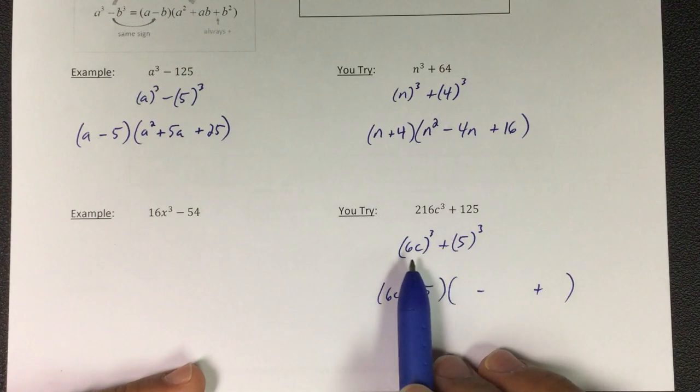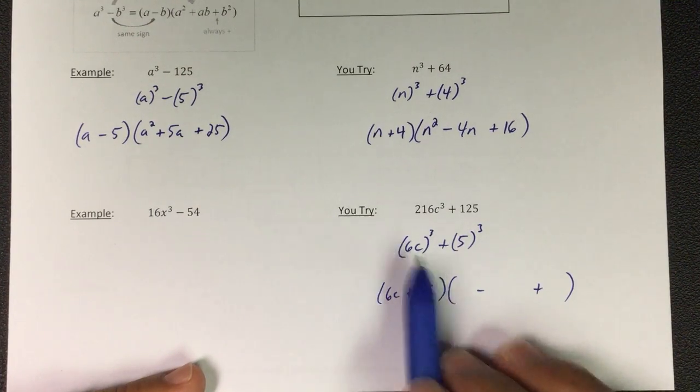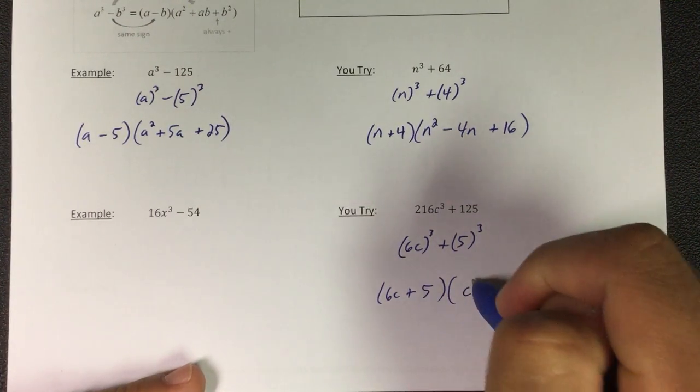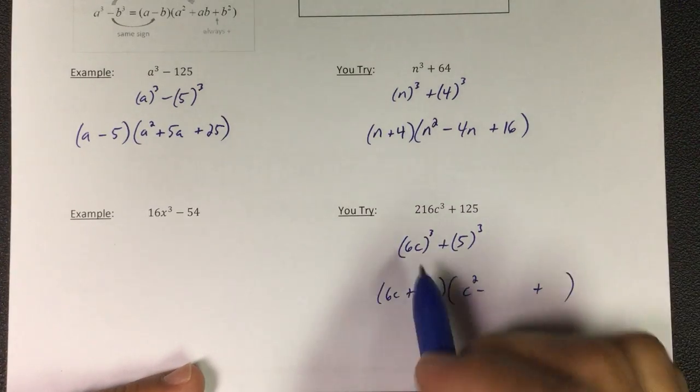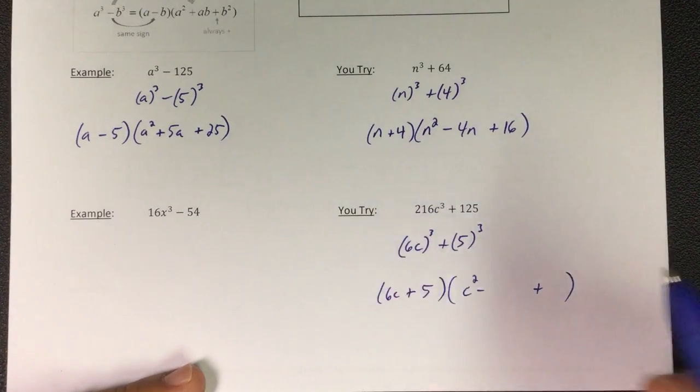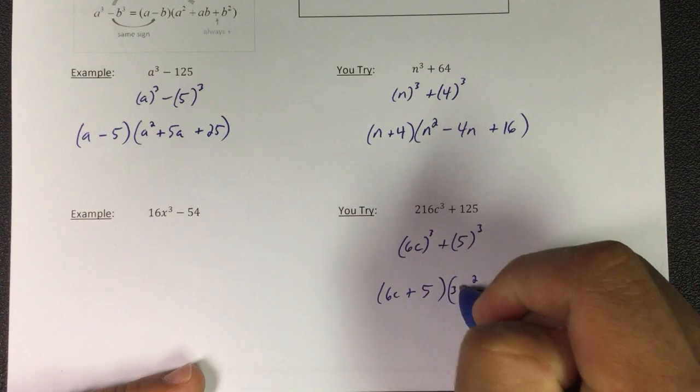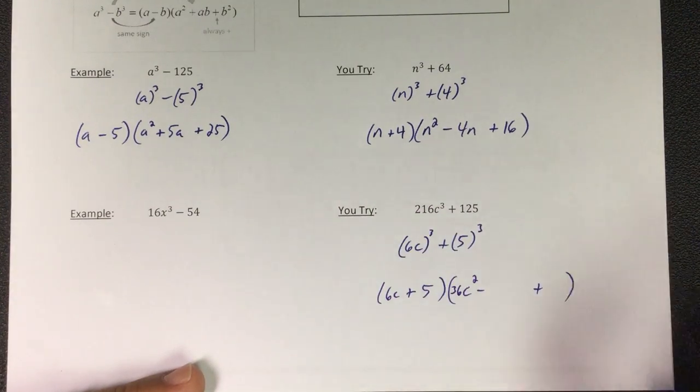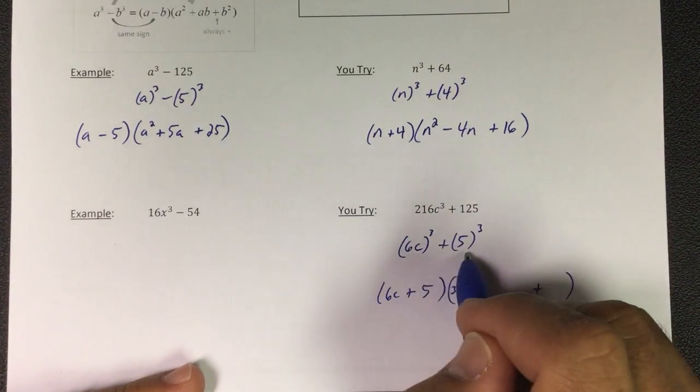Now I got the first one squared. Here's the deal: I know c squared is c squared, but what is 6 squared? It's 36. So these numbers change in here. Now the first one times the second one, that's 5 times 6 is 30.